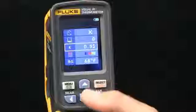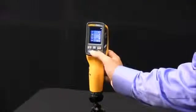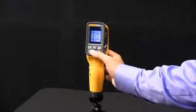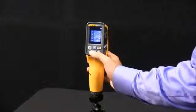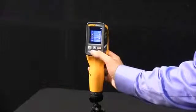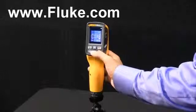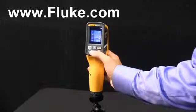Next item is the ability to adjust emissivity depending on the target that you are taking a look at. For a full list of emissivity values, you can go to the Fluke.com website.